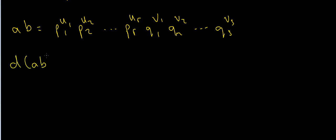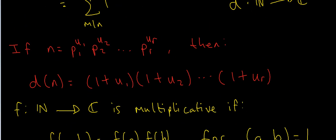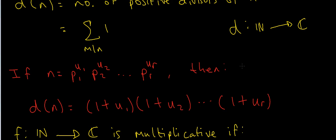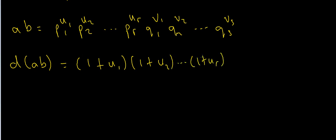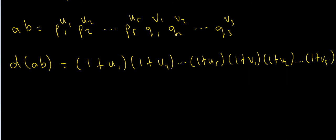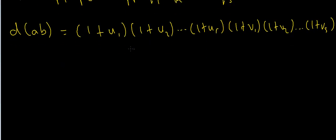Well, using our formula for the divisor function — we add 1 to each prime power and multiply them all together — d(ab) = (1+u1)(1+u2)...(1+ur)(1+v1)(1+v2)...(1+vs). This represents the prime factorization of ab because a and b are coprime, so each of the primes pi and qj are distinct.